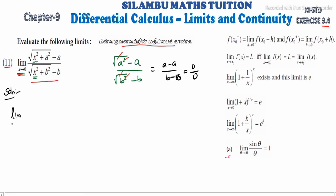Anyway, limit x tends to 0: square root of x squared plus a squared, minus a, divided by square root of x squared plus b squared, minus b. If we have a square root value in the numerator and denominator, we will rationalize.